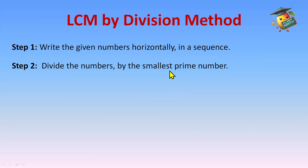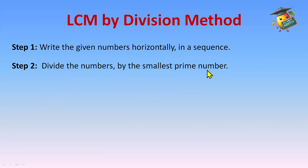We know prime numbers from our previous HCF videos. Prime numbers are numbers which have only two factors: one and themselves. In simple terms, they don't come in any other multiplication table — only their own and the one table. The smallest prime number is 2, then 3, then 5. We'll check the smallest prime number by which the given numbers divide exactly.